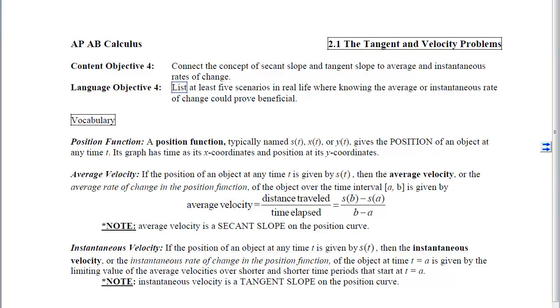This is section 2.1, the tangent and velocity problems, content objective 4, where we're going to apply these concepts of secant and tangent slopes to a real-world setting. With content objective 4, we're going to connect the concept of secant slope and tangent slope to average and instantaneous rates of change. After we do this, I would like you to be able to list at least five scenarios in real life where knowing the average or instantaneous rate of change could prove beneficial.